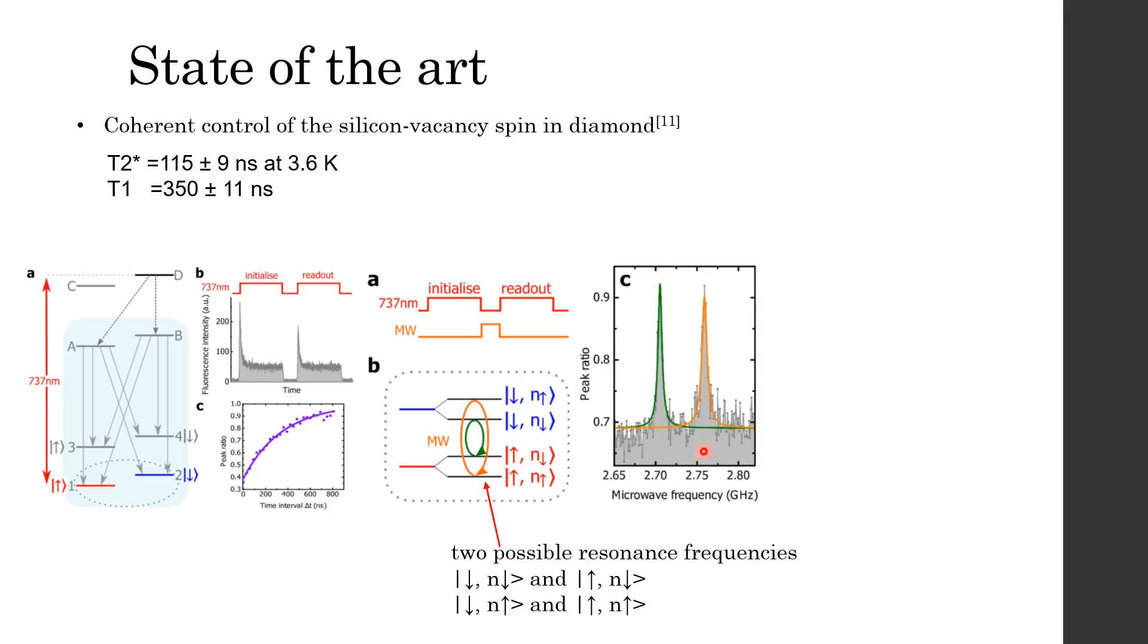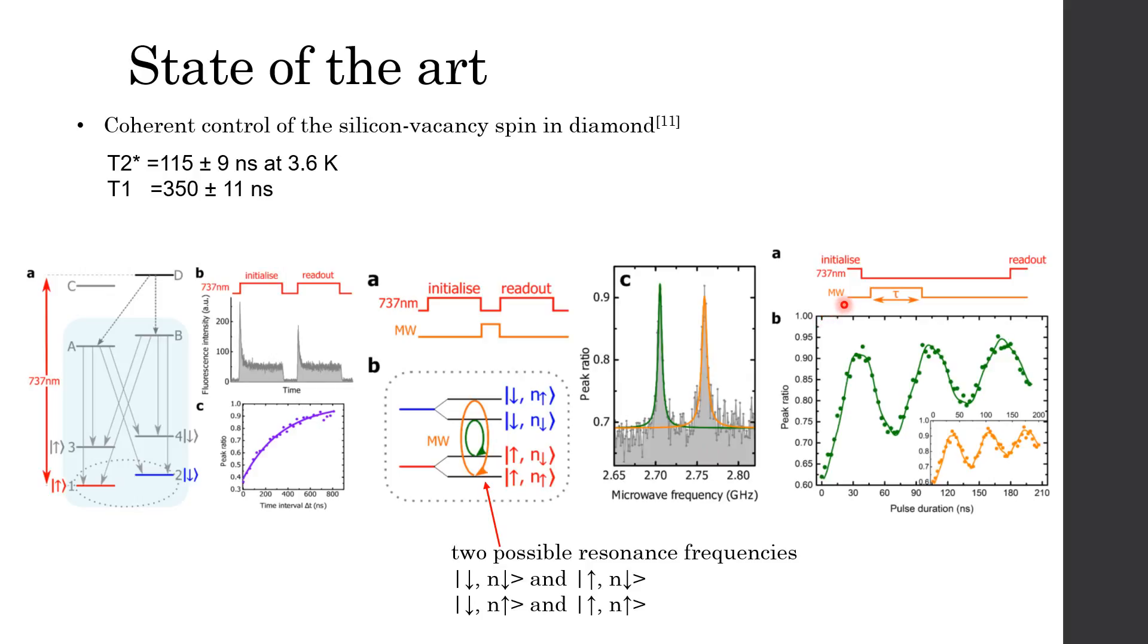Now, fix the frequency of the microwave as one of the resonance frequencies, with a varying duration tau. This pulse is applied between the initialization and readout pulse. Here, we can see the Rabi oscillation for the green arrow and its inset shows the Rabi oscillation for the orange arrow. So, the coherent control of the spin is realized.